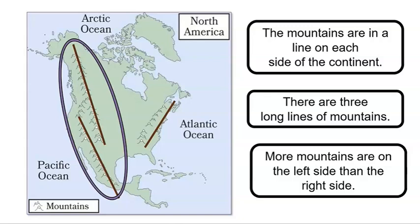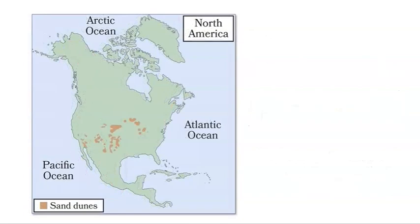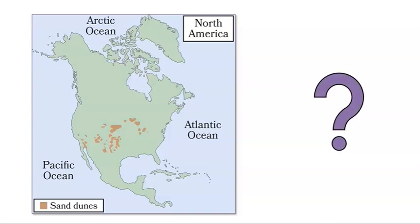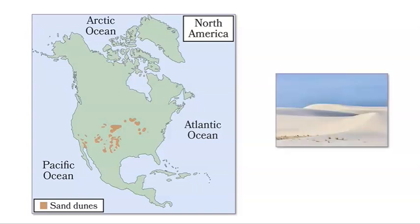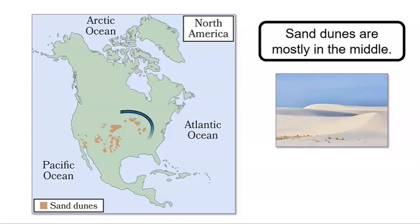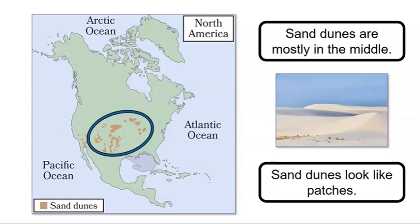Next, let's look at the map of the sand dunes. This color shows where sand dunes are on the map. Do you remember what sand dunes are? Sand dunes are hills made of sand. So what do you notice on this map? Point to where you see sand dunes. I noticed that the sand dunes are mostly in the middle of the continent, and they look like patches.